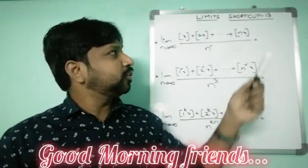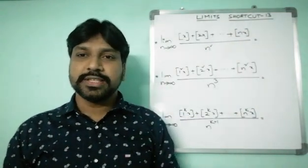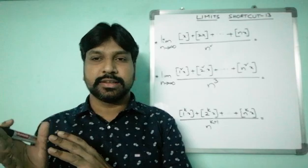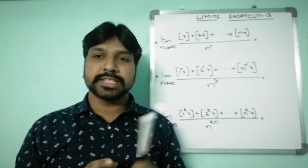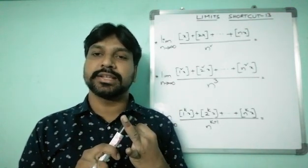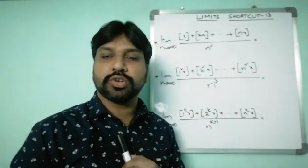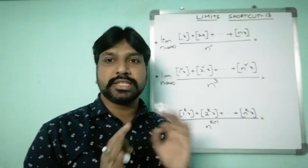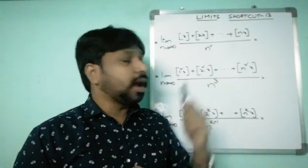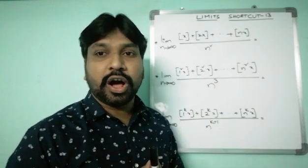Good morning. Today I'm going to discuss shortcut number 13 on limits. I'm going to reveal the shortcut on bracket X and fractional part of X. Bracket X has three names: the greatest integer function, the integral part of X, and the step function of X. By using bracket X and fractional part of X, we are going to solve sums very easily in a fraction of seconds. First I'll discuss problems, then reveal the shortcut.